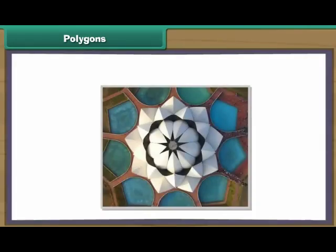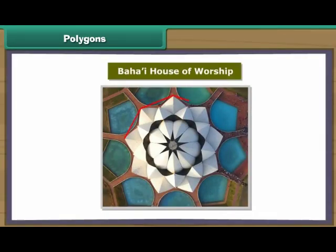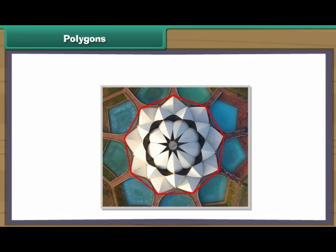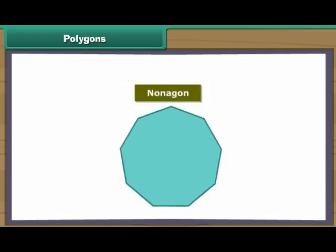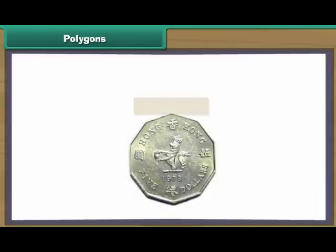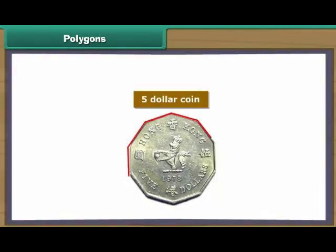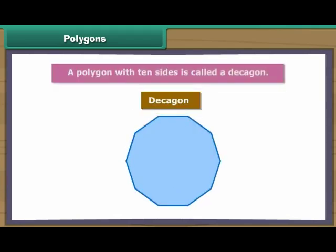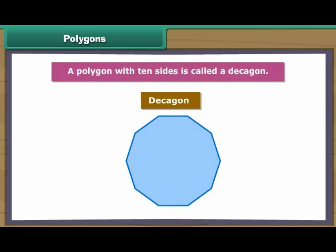Look at this image — it is the Bahá'í house of worship. All Bahá'í houses of worship have nine sides. A nonagon is a polygon made up of nine line segments. Here is an old five-dollar coin from Hong Kong; it has ten sides. A polygon with ten sides is called a decagon.